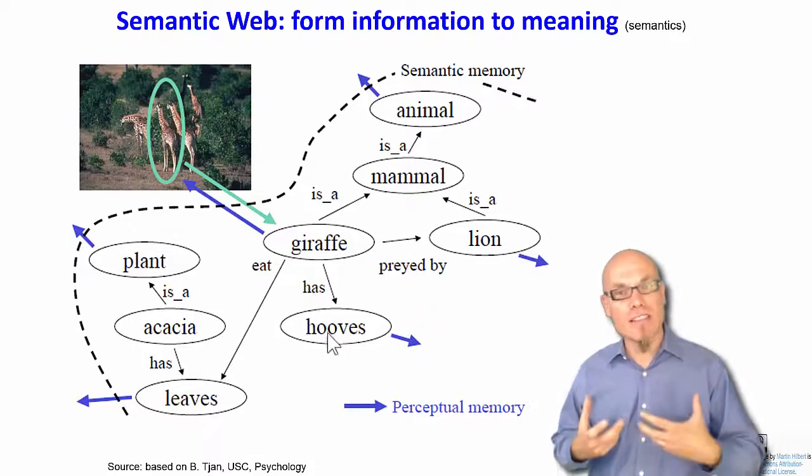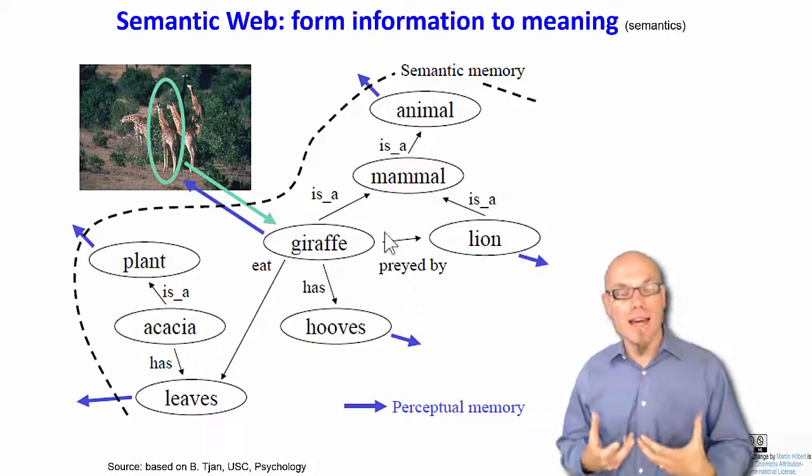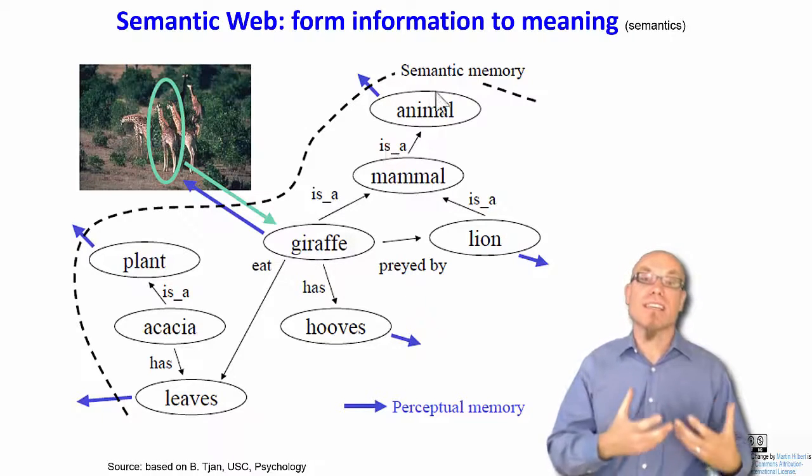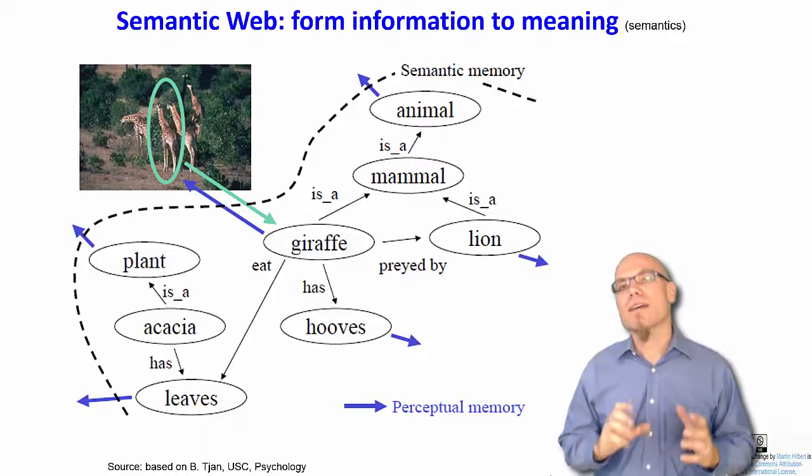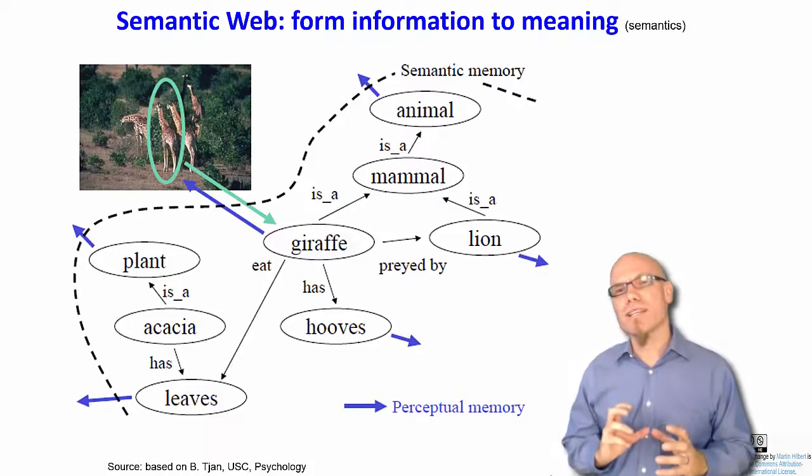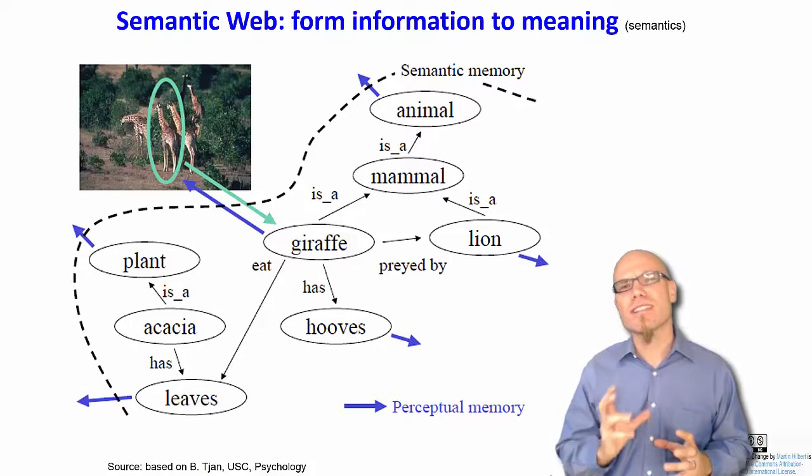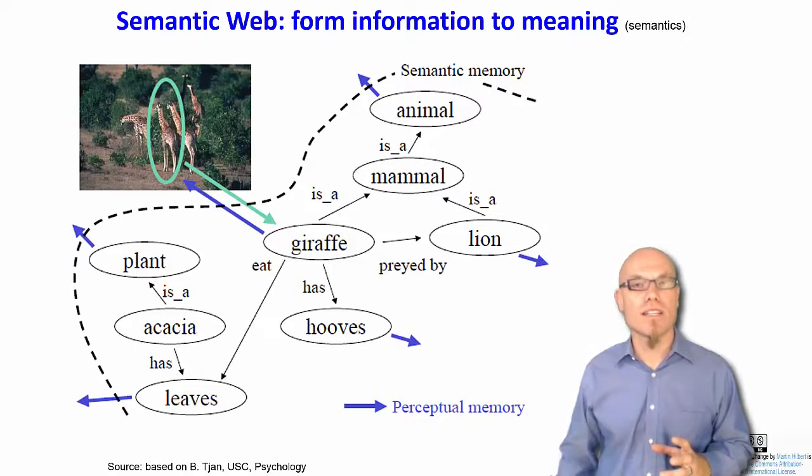For example, here you can see the definition, the semantic meaning of the word giraffe. It eats leaves, it has hooves, it's preyed by a lion, it is a mammal, which is an animal, and these are how semantic nets are constructed. So the semantic web means that we have to teach these kind of meaning networks to our technology.